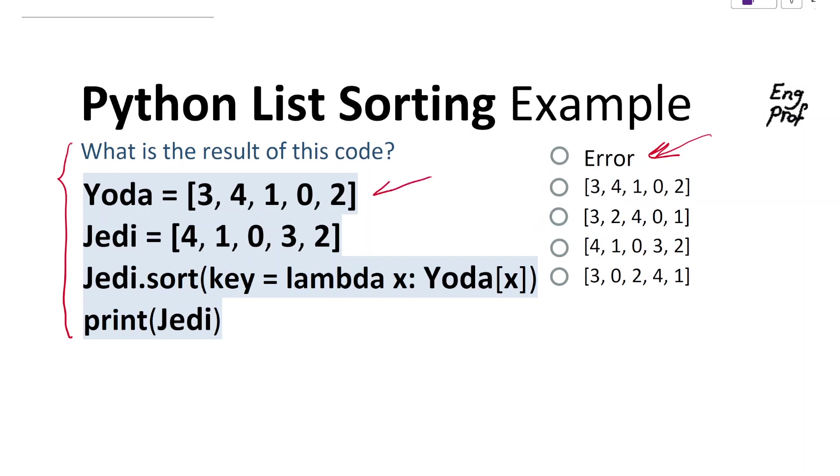In the first line, we define a list named Yoda that contains elements [3, 4, 1, 0, 2]. In the second line, we define a second list named Jedi with elements [4, 1, 0, 3, 2].